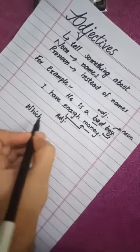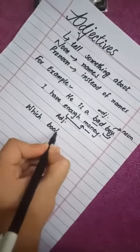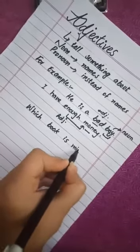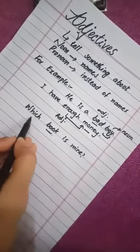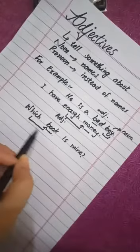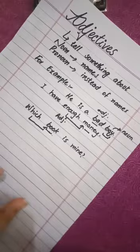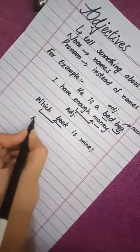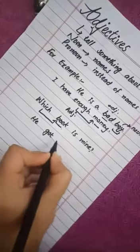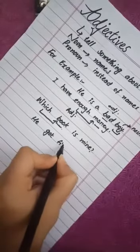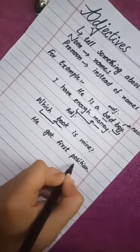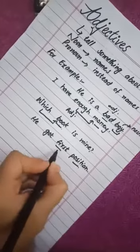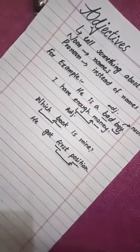Another example: 'Which book is mine?' Here, 'book' is a common noun, and 'which' is a word adding something to the noun, so it is an adjective. Similarly, 'He got first position' — 'position' is a noun and 'first' is a word added to the noun, so it is also an adjective.